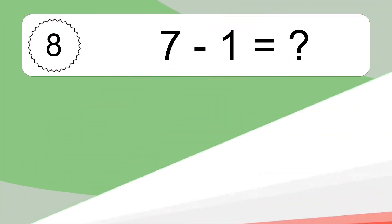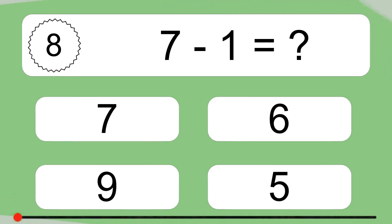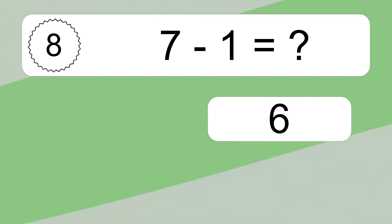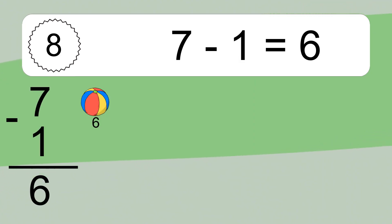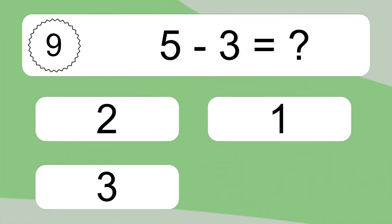7 minus 1 equals what? 7 minus 1 equals 6. Let's count it: 6. 5 minus 3 equals what?